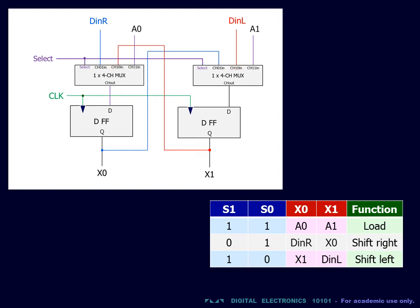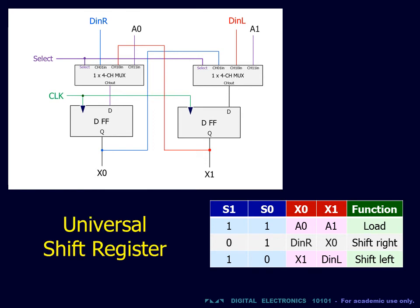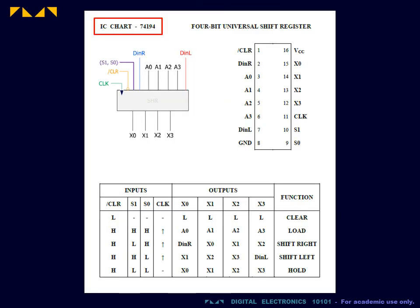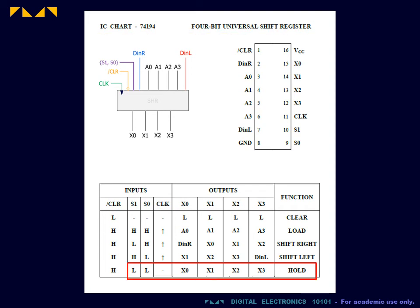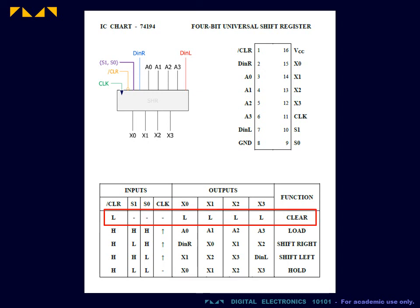The parallel input bidirectional shift register is also called the universal shift register. The TTL 74194 IC is a 4-bit universal shift register. In addition to our earlier design, the S1 equals 0, S0 equals 0 input state is used as a data hold. In addition, this IC has an active-low asynchronous reset. With memory devices, such a reset is called a CLR.